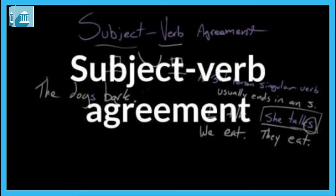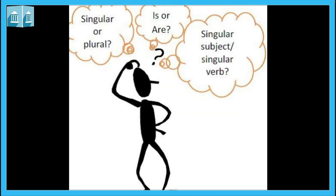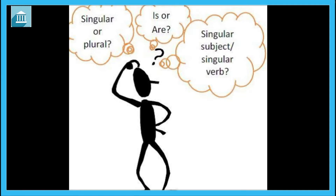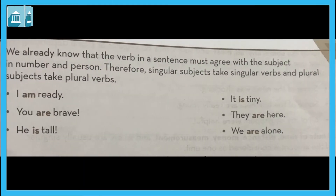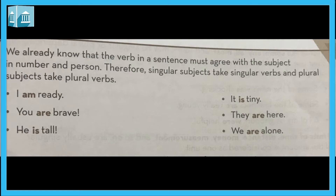Have you ever heard about subject-verb agreement? People are always confused about what it is. The verb in a sentence must agree with the subject in number and person. Therefore, singular subjects take singular verbs and plural subjects take plural verbs. The subject and the verb need to agree with and match each other.